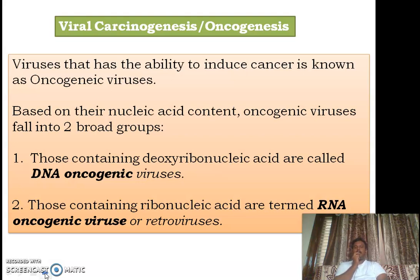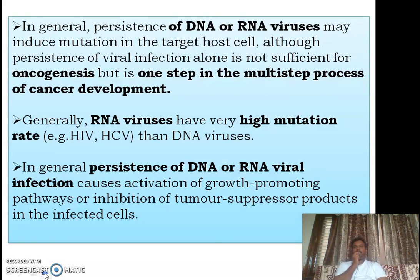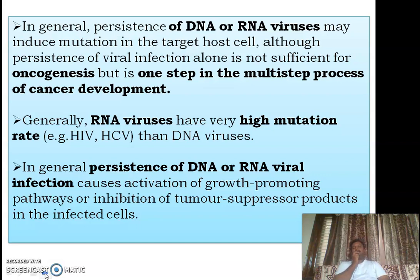Based on the nucleic acid component, oncogenic viruses fall into two broad categories: DNA oncogenic viruses and RNA oncogenic viruses. Infection by these viruses is not the only step — it is one step in the multi-step process of cancer development. Generally, RNA viruses have a higher mutation rate than DNA viruses, meaning an individual with a chronic RNA viral infection is at greater risk of developing cancers compared to DNA viruses, since DNA viruses have a lesser mutation rate.